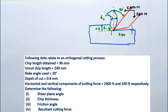In this problem, the following data related to an orthogonal cutting process is given: chip length obtained is 96 mm, uncut chip length is 240 mm, rake angle is 20 degrees, depth of cut is 0.6 mm, and the cutting force is 2400 newton with thrust force 240 newton respectively.